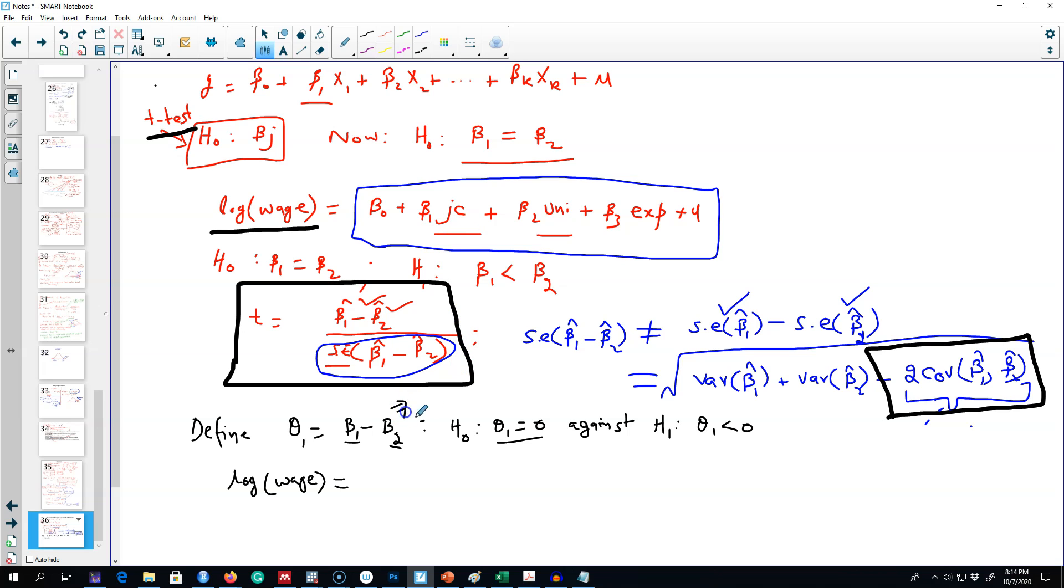This implies that beta 1 equals theta 1 plus beta 2. So we're going to plug in the value of beta 1 here. We have our new model as beta 0 plus, instead of beta 1, I'm going to plug in theta 1 plus beta 2 times junior college, plus beta 2 times university, plus beta 3 times experience. So this is our new model now.